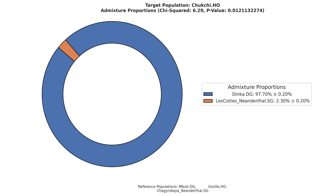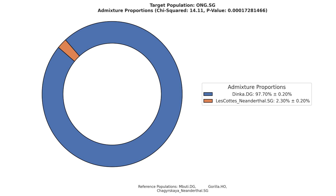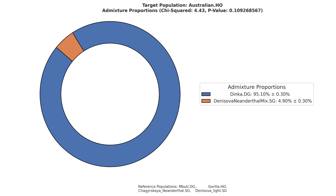The Kinh of Vietnam scored 2.2%, the Chukchi scored 2.3%, the Native Hawaiians scored 2.3%, the Onge of India scored 2.3%, the Mentawai of Indonesia scored 2.6%, and the Australian Aboriginals scored 4.9%.